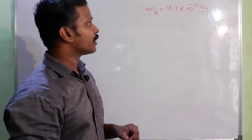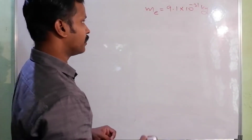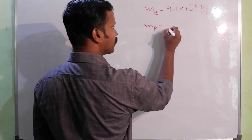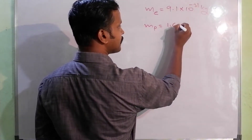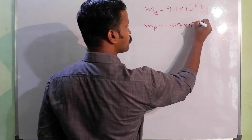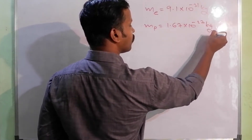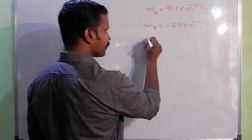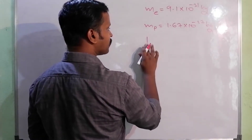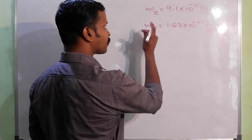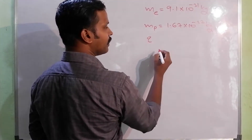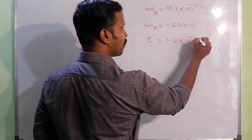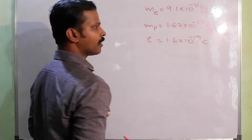9.1 into 10 raise to minus 31 kg. Mass of proton is equal to 1.67 into 10 raise to minus 27 kg. We need the charge of proton and charge of electron, so Q is equal to 1.6 into 10 raise to minus 19.